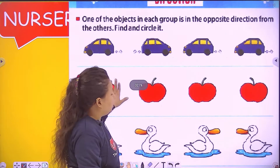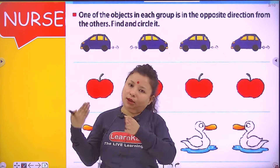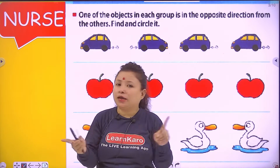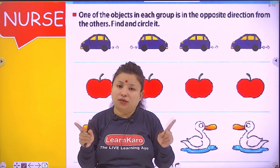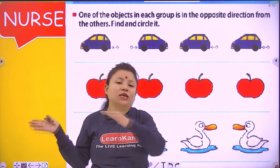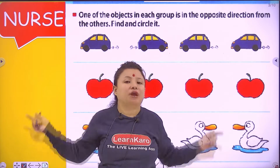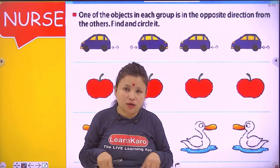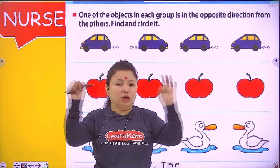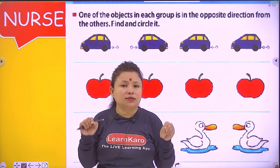In sabhi row mein kuch objects same direction mein hain, but one object aisa hai jo same direction mein nahi jara hai. Woh opposite — woh doosari direction mein jara hai. So humein kya karna hai? Humein find out karna hai us object ko jo opposite direction mein jara hai, and then we have to circle it. Simple.